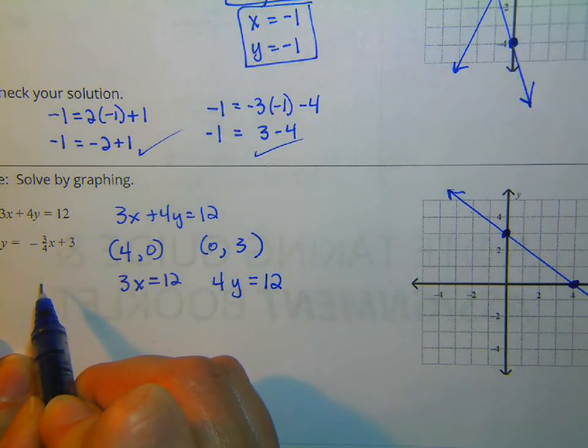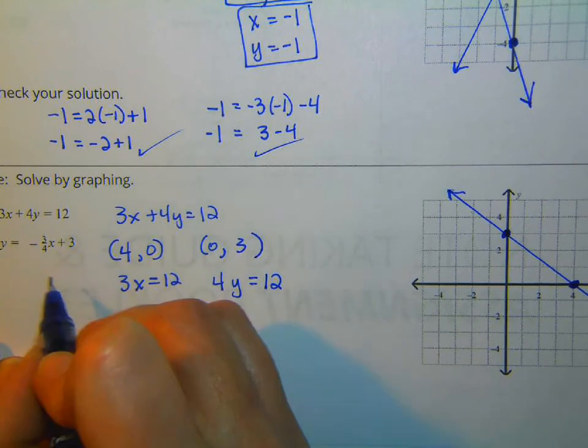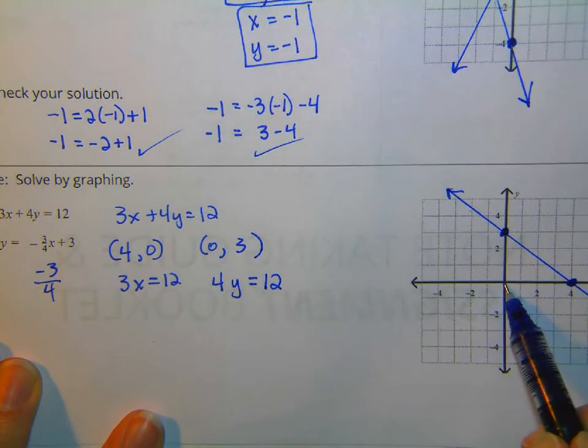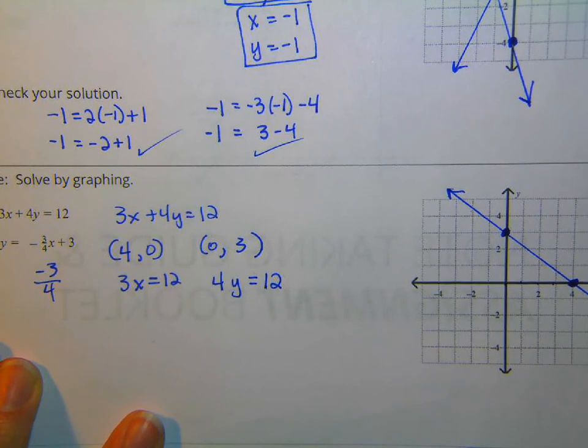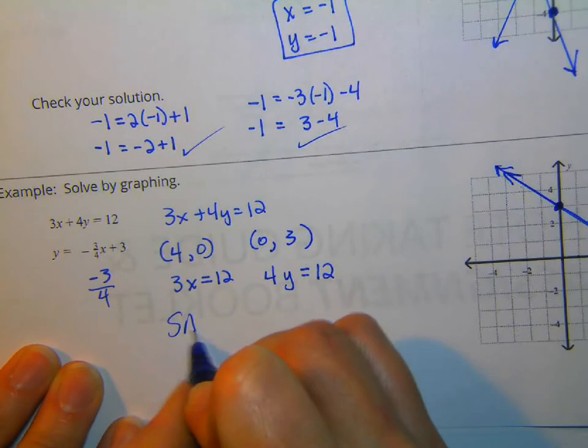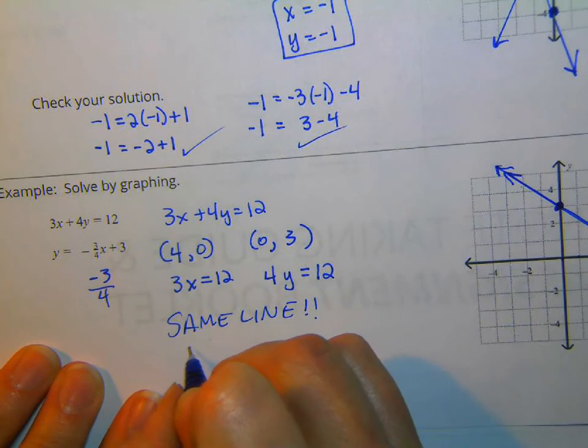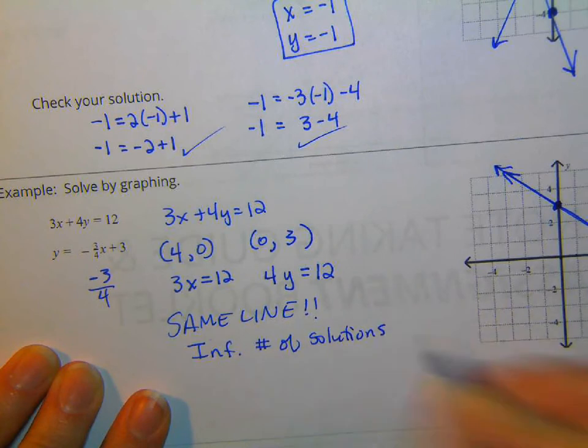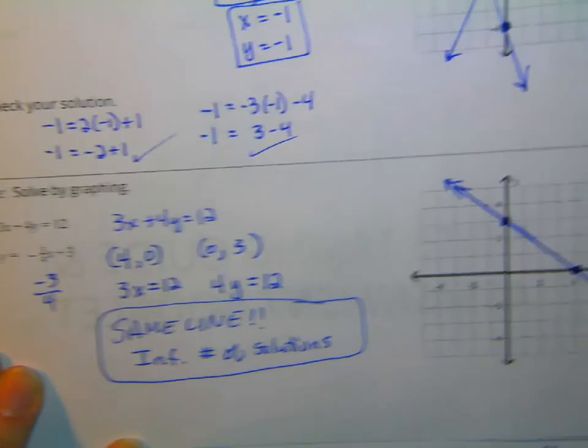Negative 3 over 4. So from here we go down 3 and right 4. Wait, what did you say, Keaton? It's the same stinking line. Same line. It's the same line. What does that mean? It has an infinite number of solutions. If a point works in the top equation, it also works in the bottom equation. It's the same line.